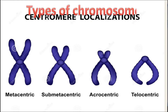Types of chromosome according to the location of the centromere: If the centromere is at the exact center of all sister chromatids, then it is called metacentric. If it is towards the p arms, then it is called submetacentric, at one side of the p arm.